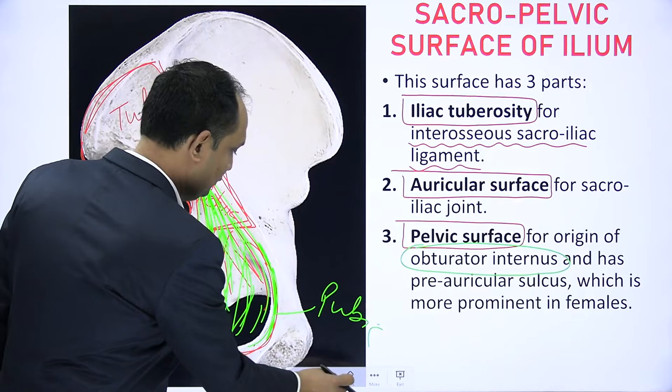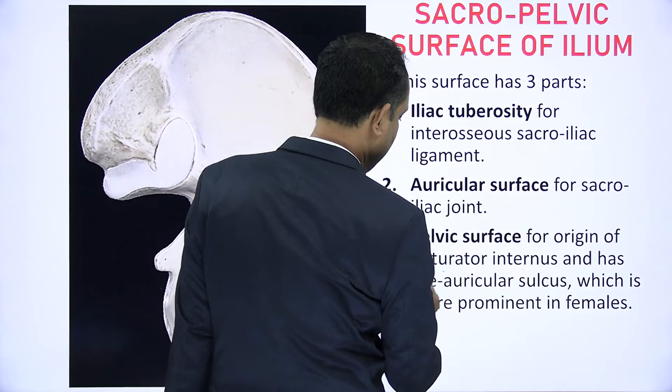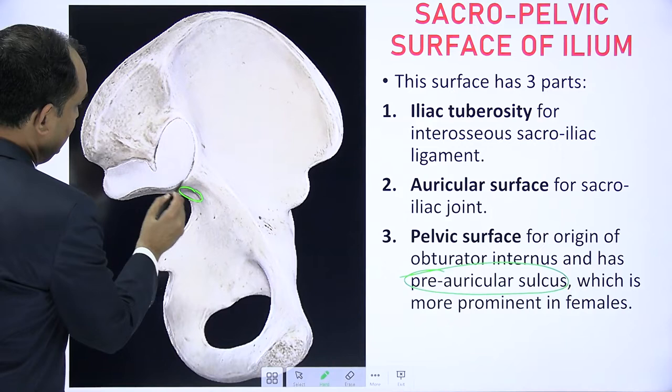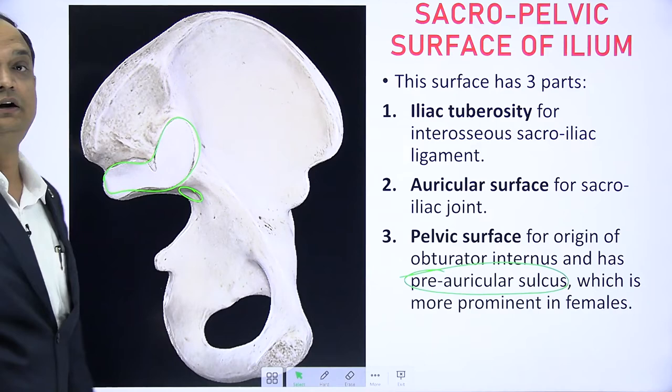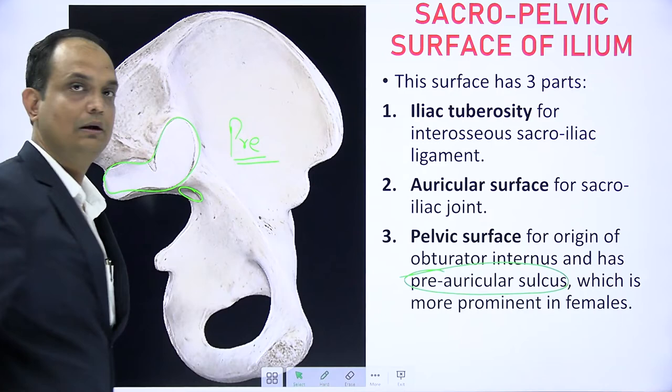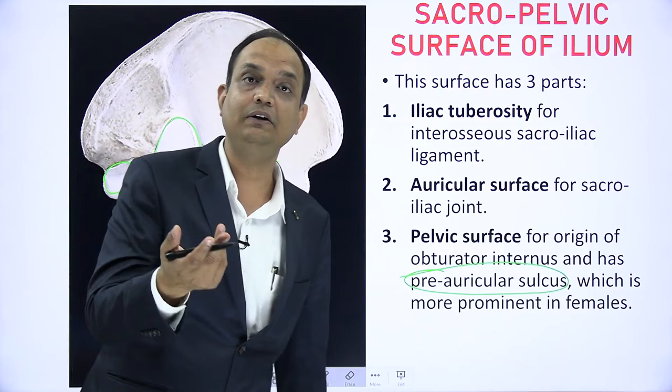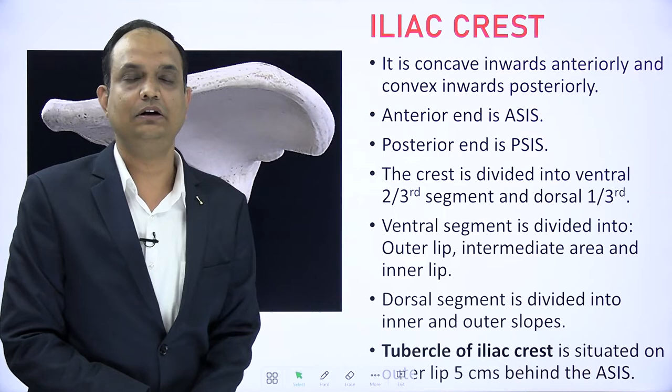Apart from that, there is one more important thing known as pre-auricular sulcus. The pre-auricular sulcus is a prominent feature of the female hip bone. This is the area which is in front of the auricular surface — 'pre' means before. In this pre-auricular surface, you have an impression known as the pre-auricular sulcus, which is a prominent feature of the female hip bone.